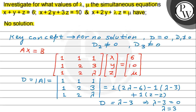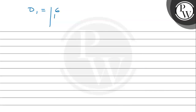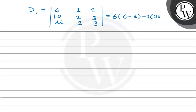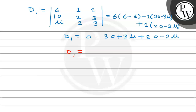Now computing D1 by replacing the first column with the constants 6, 10, mu. Expanding: 6 times (2·lambda minus 6), minus 1 times (10·lambda minus 3·mu), plus 1 times (20 minus 2·mu). This gives terms involving minus 3·mu minus 2·mu, and then minus 2·mu plus 2·mu, leading to the condition on mu for no solution.